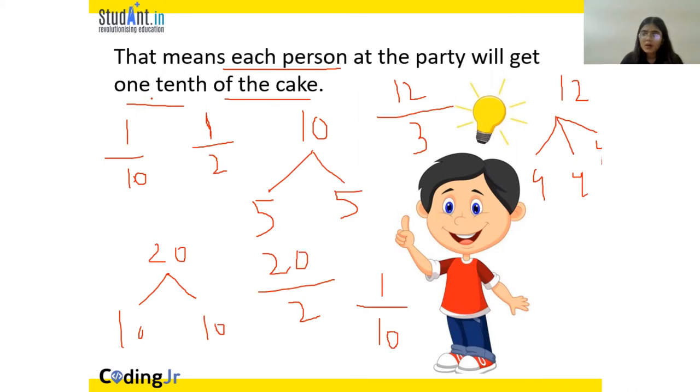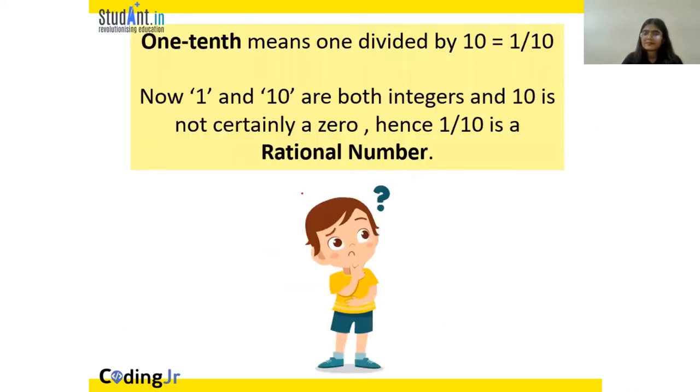So, that's how we get 1 tenth as our answer. 1 tenth means 1 divided by 10. 1 cake divided among 10 people. Now, 1 and 10 are both integers. And 10 is certainly not 0. Hence, 1 by 10 is a rational number.